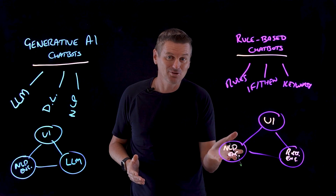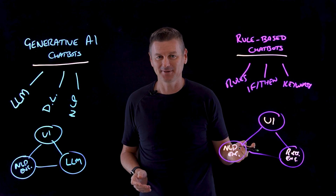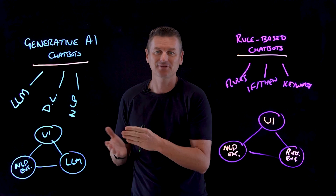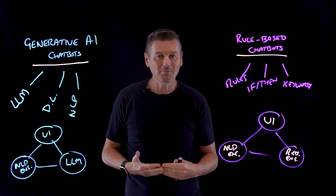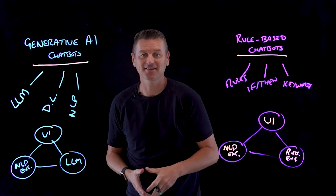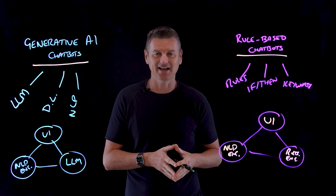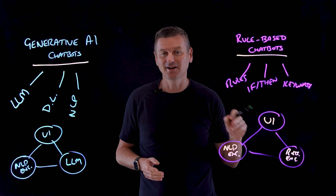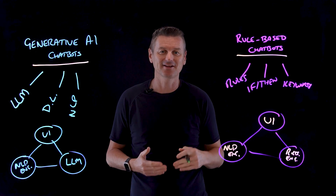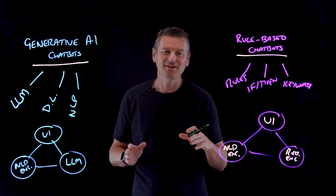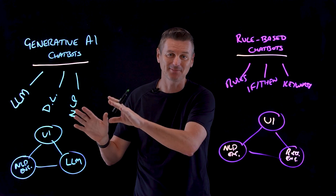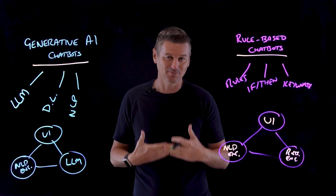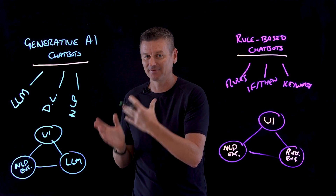The NLP engine in a rules-based chatbot extracts intent, entities, and context. But the NLP engine combined with the large language model in a generative AI chatbot can handle much more complex language structures and nuances — it can better understand the user's input, context, and intent. Large language models do not rely on pre-written rules; they have been trained on vast amounts of text data, which allows the chatbot to generate contextually relevant and human-like responses. One significant advantage of generative AI chatbots is their ability to learn and adapt over time — by continually updating their knowledge and refining their language models, these chatbots can provide more accurate and relevant responses.